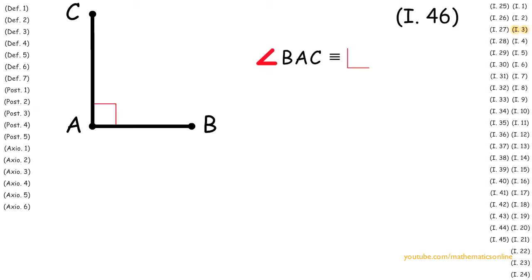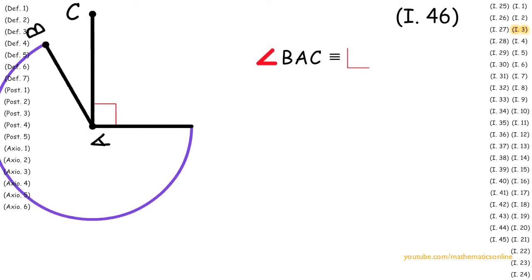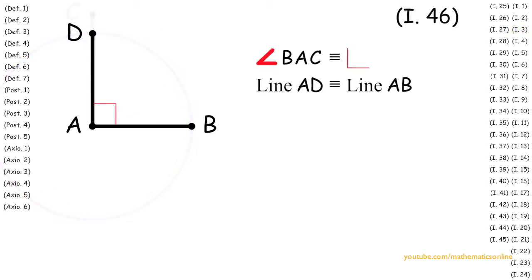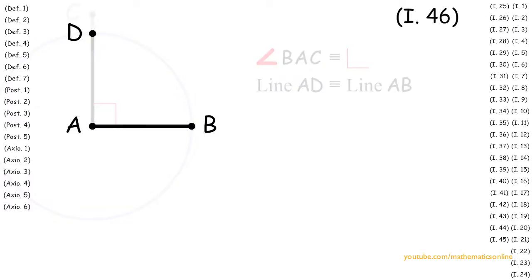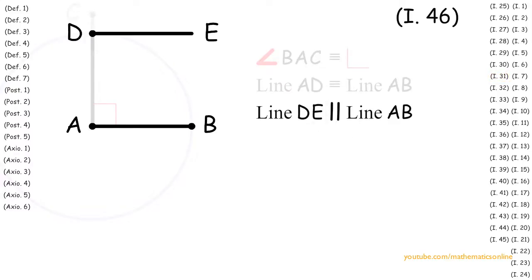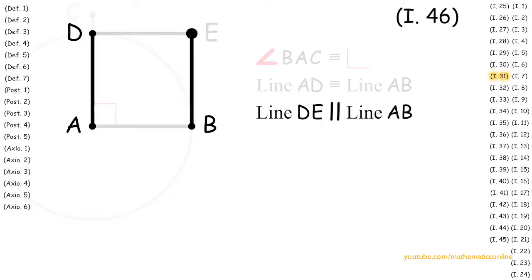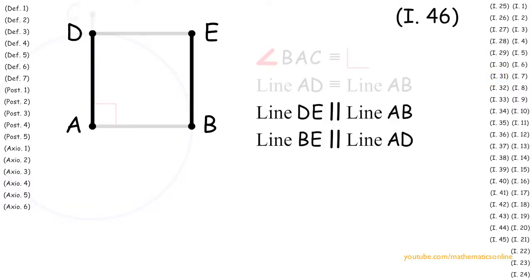Next with line AB and line AC we apply Proposition 3 to make line AD congruent to line AB. Now with line AB and point D we apply Proposition 31 to construct a parallel line through point D. Therefore line DE is parallel to line AB. Next with line AD and point B we apply Proposition 31 again to construct a parallel line through point B. Therefore line BE is parallel to line AD.